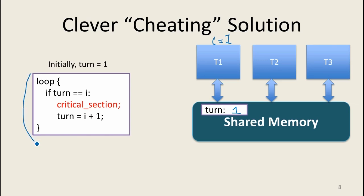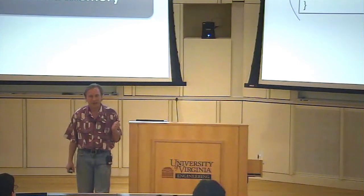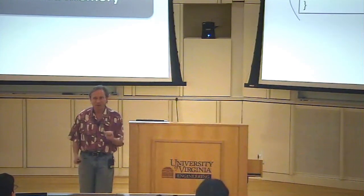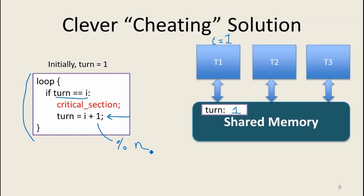We're just going to check if it's our turn. If the value of turn equals i — where i is the identity of this processor — then we're going to do our critical section. And when we're done with it, we're going to add 1 to turn to say it's the next processor's turn. There should be a mod n in here so it eventually cycles back. Since Dijkstra numbered them from 1 to n instead of 0 to n-1, that mod n is not quite correct, but hopefully you get the intent. This seems like a really trivial solution.